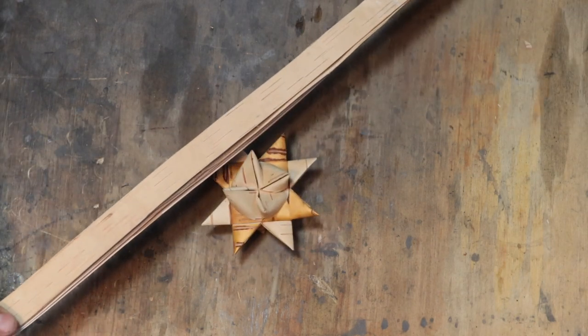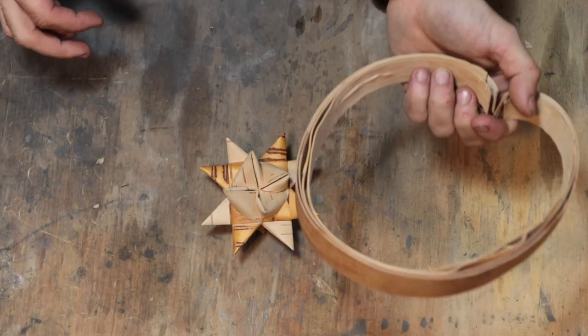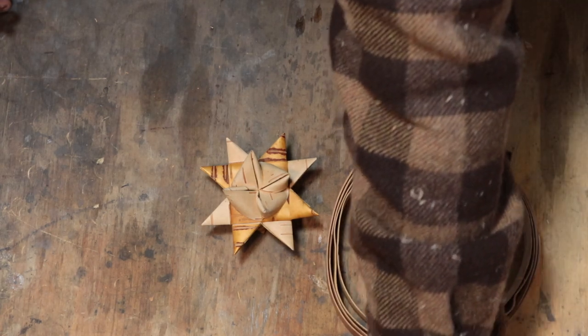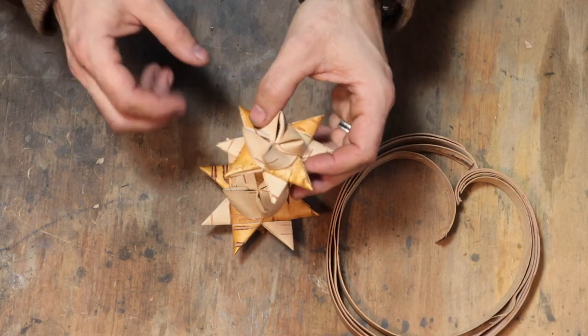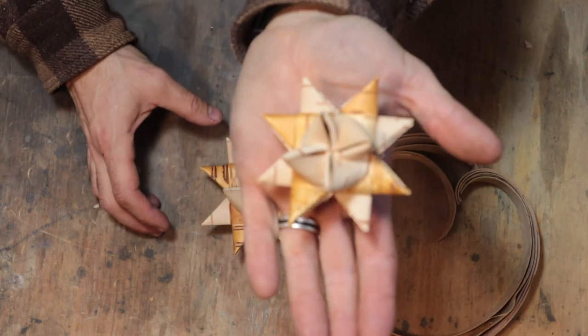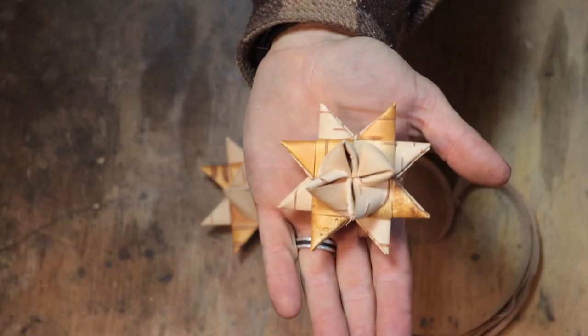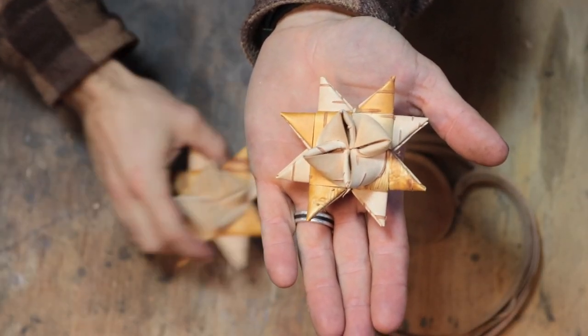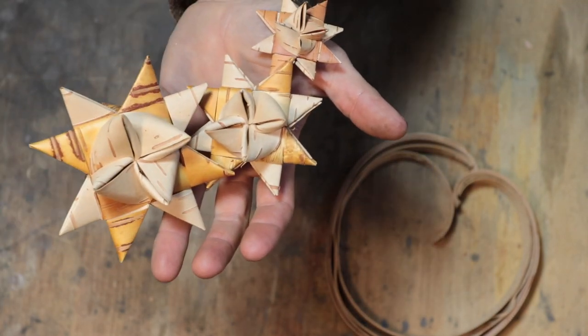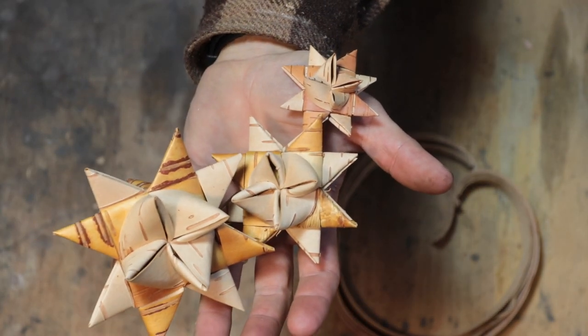So I've already cut out the birchbark strips. You can make them out of different widths. This one is from some three quarter inch birchbark, smaller than this one. And then we got some half inch birchbark as well.